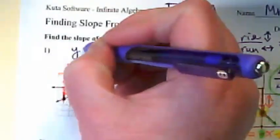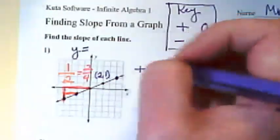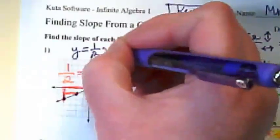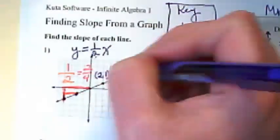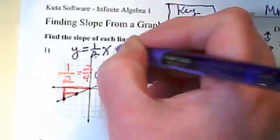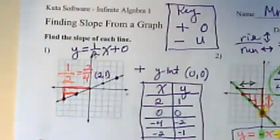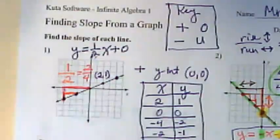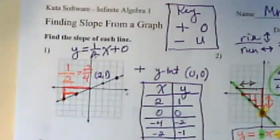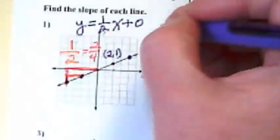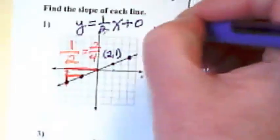Typically the equation comes in y equals mx plus b form, m being the slope and we just found the slope is 1 half. And what's my y intercept on this one? Zero. So I would write this as y equals 1 half x plus zero. Or that could be just written as y equals 1 half x.